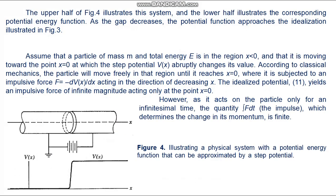The upper half of figure 4 illustrates this electrode system, and the lower half illustrates the corresponding potential energy function. As the gap decreases, the potential function approaches the idealization of figure 3. Assume that a particle of mass m and total energy E is in the region x < 0 and moving towards x = 0, at which point the step potential V(x) abruptly changes its value.